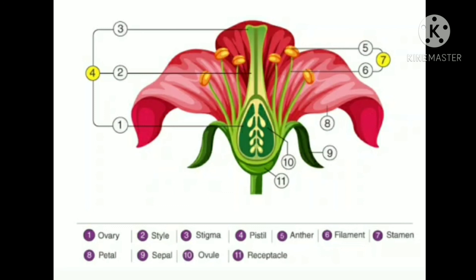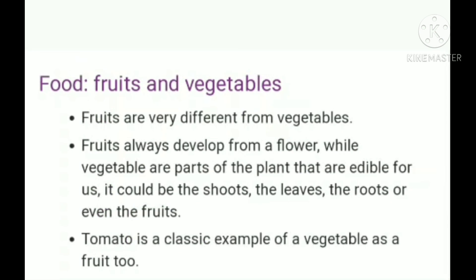The innermost part of a flower is called the pistil. There are three parts in a pistil: style, stigma, and ovary. If you cannot see it completely, remove the remaining stamens. You can observe the inner parts of the ovary using a lens, and draw and label the inner parts of the ovary in your notebook.